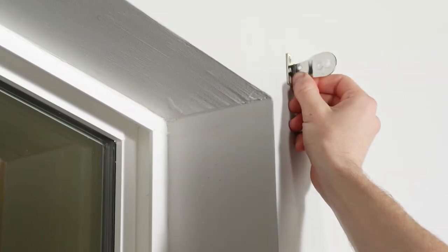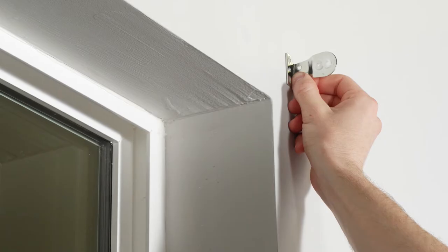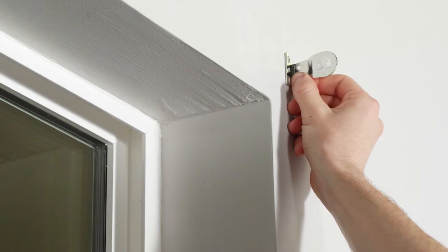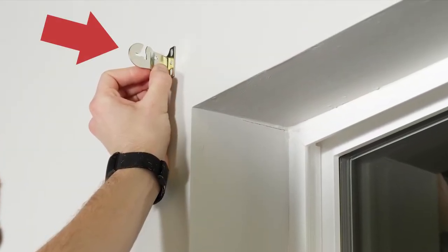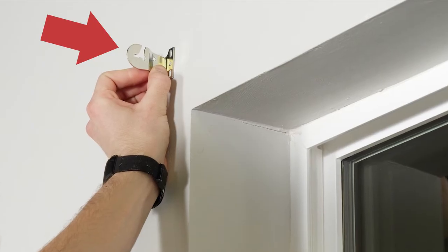The first step is to mark where you want to place your brackets. Since this is an outside mount, we're going to put them above the window frame. For a standard roll, be sure to install the hooked bracket on the left side, like this.